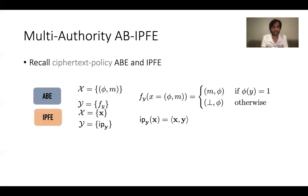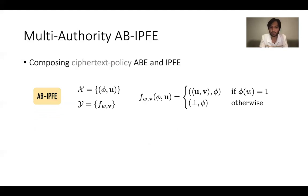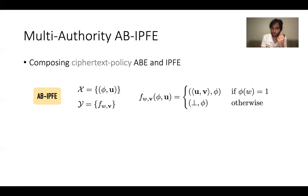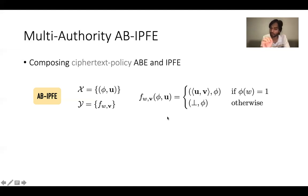Combining ABE and IPFE, we get attribute-based IPFE. In AB-IPFE, instead of having a message m in the ciphertext input space, we have a message vector u. The key inputs contain an attribute w and a key vector v. Evaluating function f_{w,v} on input (φ, u) gives us the inner product ⟨u, v⟩ as long as the predicate φ is satisfied on key attribute w — otherwise we do not learn anything. So if the attribute is satisfied, you learn some partial evaluation of the message vector; otherwise, nothing.